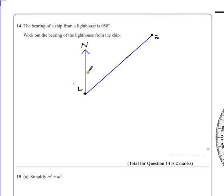So we know that this angle here is 50 degrees, giving us a bearing of 050 degrees. The question asks, can we work out the bearing of the lighthouse from the ship? So S, the ship, now becomes my starting point.